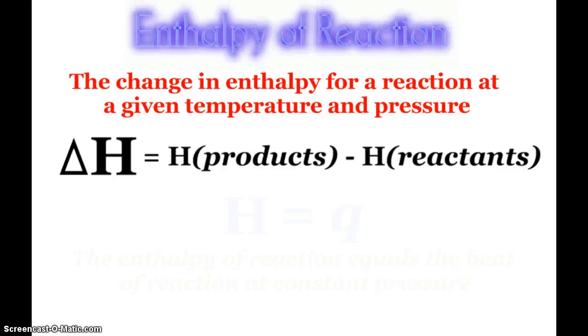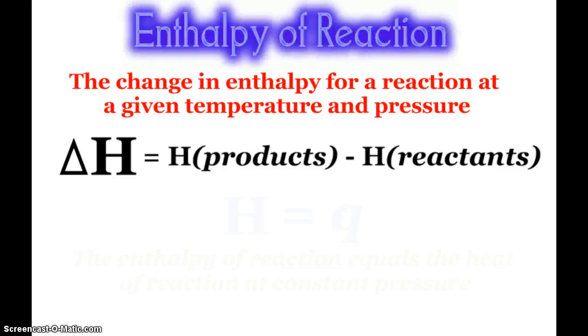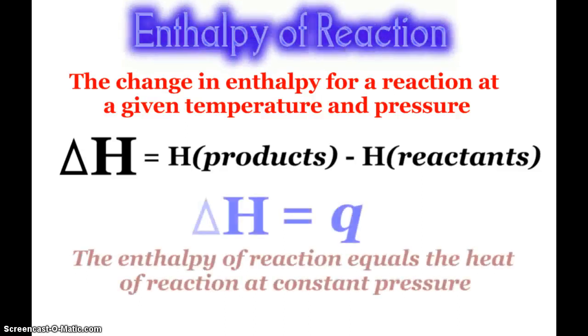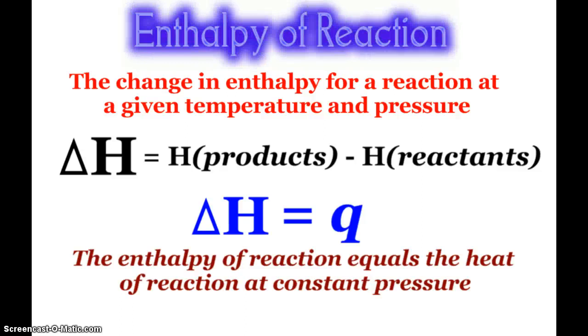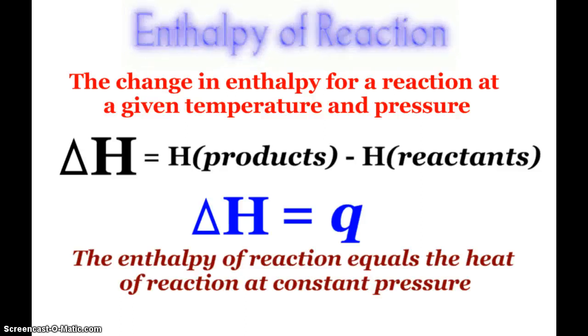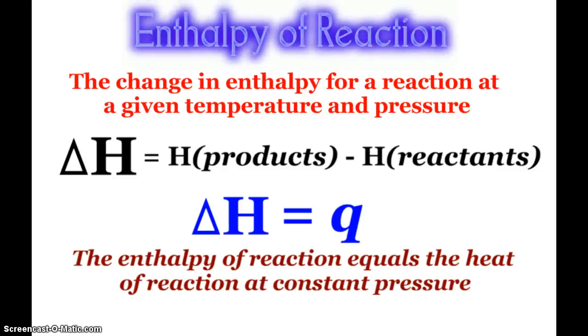The enthalpy of reaction is the change in enthalpy for a reaction at a given temperature and pressure. ΔH, the enthalpy of reaction, is the enthalpy of the products minus the enthalpy of the reactants. Typically in lab, we're running reactions at constant pressure. There's not much you can do to dramatically alter the atmospheric pressure around a reaction. When that is the case, we say that ΔH, the change in enthalpy, equals Q, the heat of the reaction. That'll be very helpful as we do these different calculations.